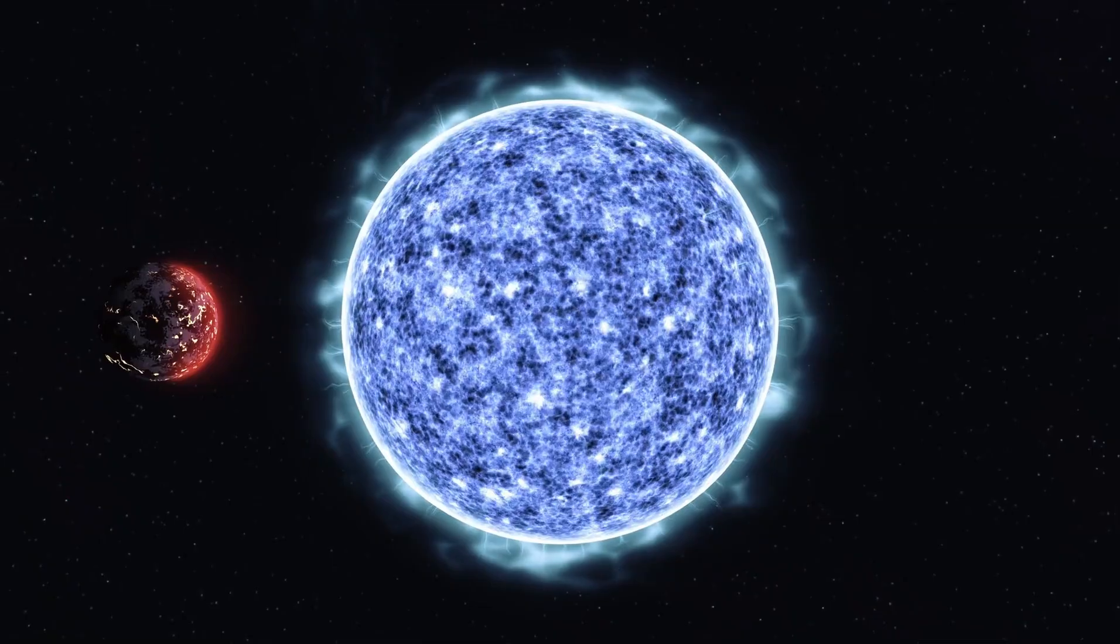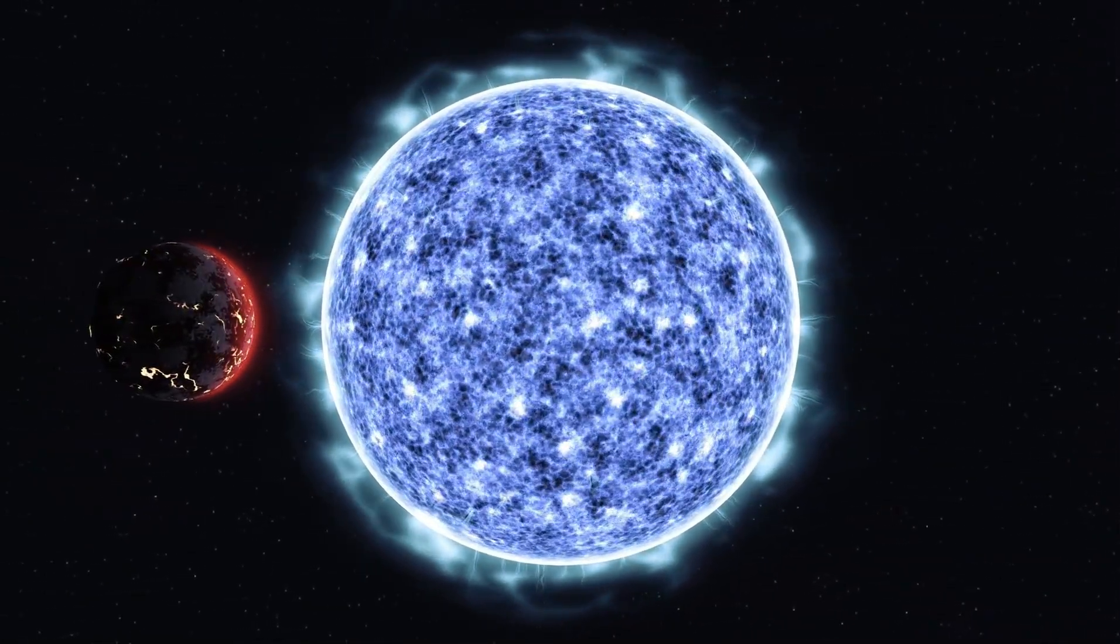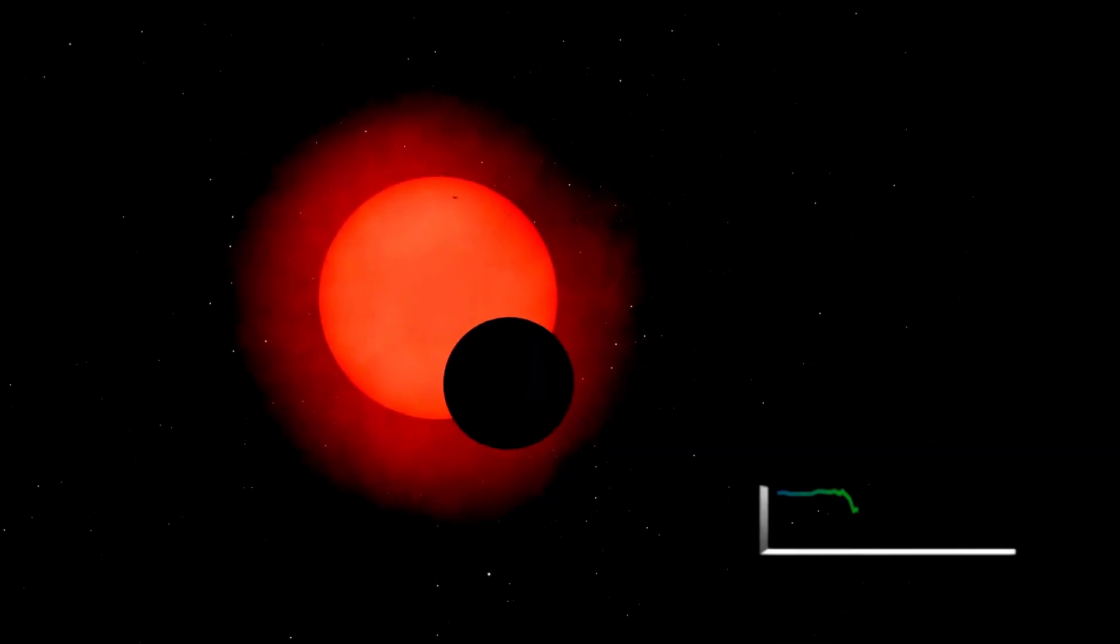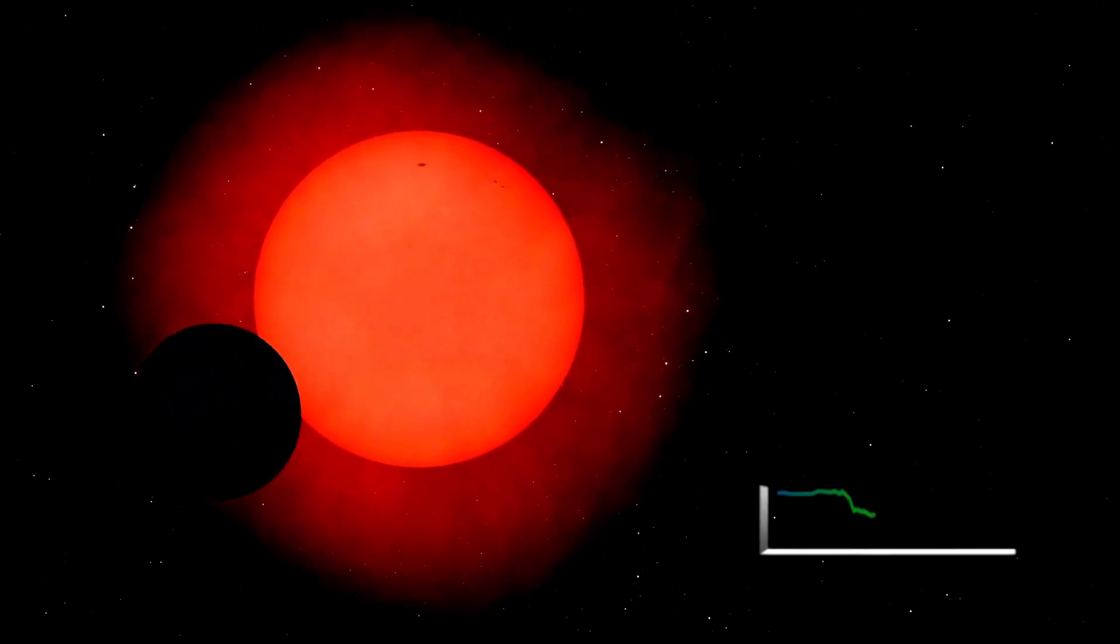It has undergone a radical transformation from a hot blue star to the cooler red supergiant we observe today. As it burns through its nuclear fuel, Betelgeuse is gradually losing mass and undergoing immense changes within its core.